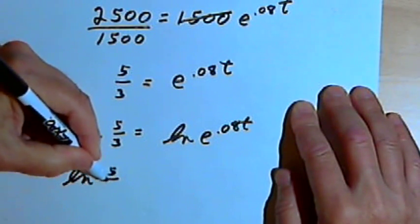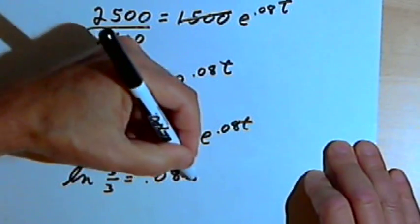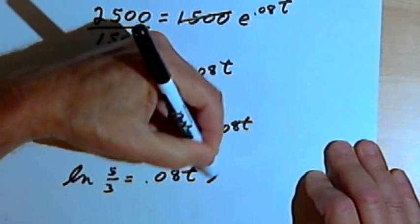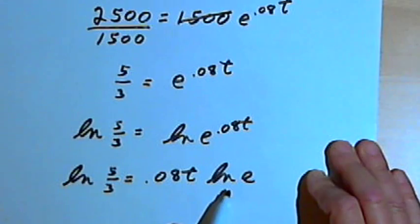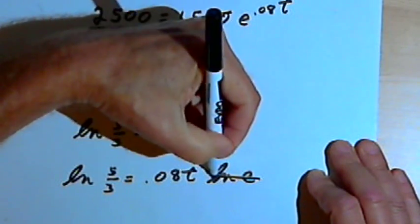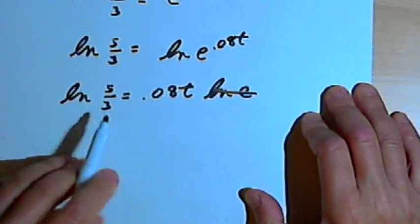So the natural log of 5 thirds will equal 0.08 t times the natural log of e. But the natural log of e is 1. So I'll just cross that out. And now to get the t by itself, I'll just divide both sides by 0.08.